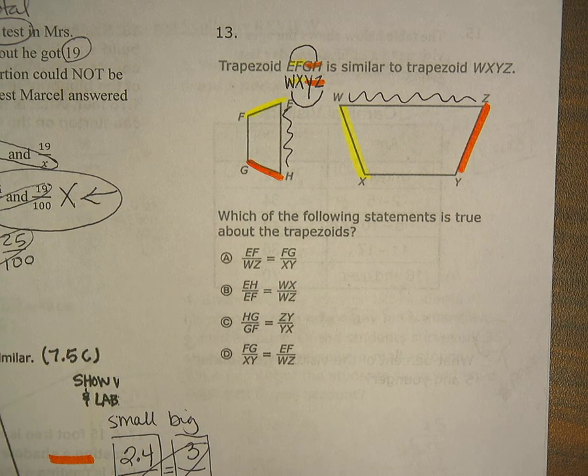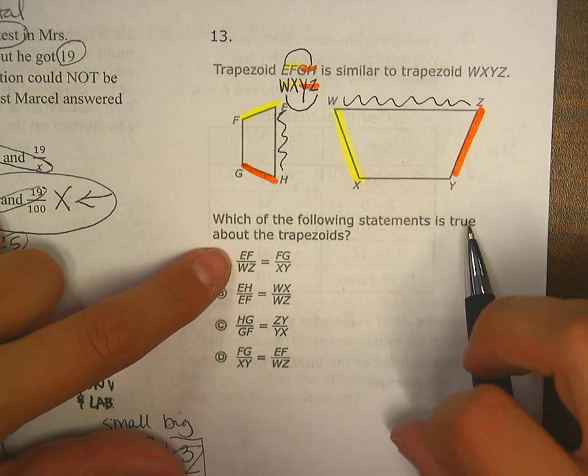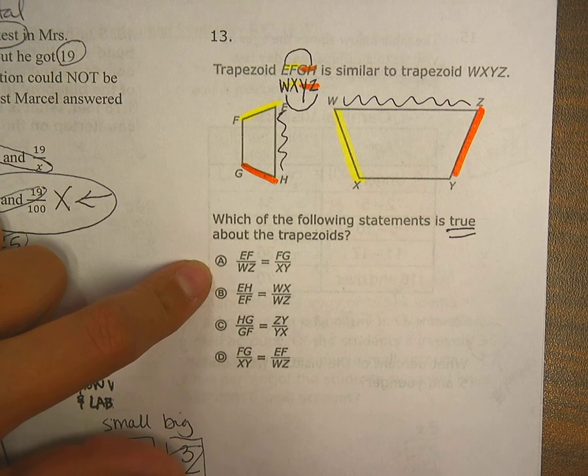So from here, I'm going to color code my answer choices. It says which of the following statements is true about the trapezoids.